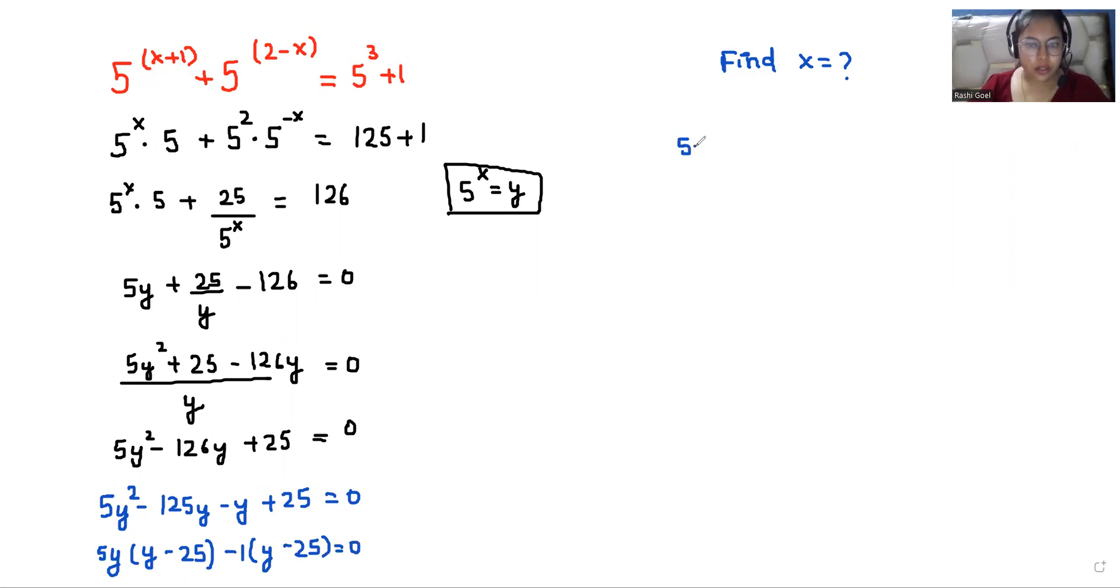So we have two roots: 5y minus 1 or y minus 25 equals 0. So either 5y minus 1 equals 0, so 5y equals 1, y equals 1/5.